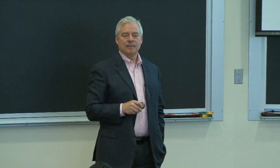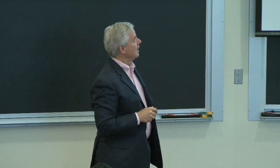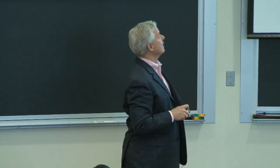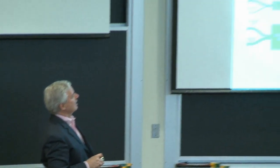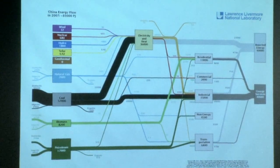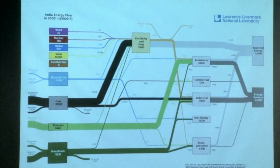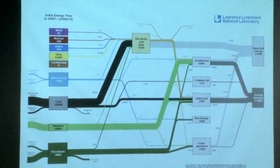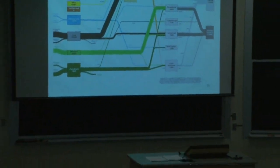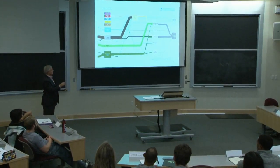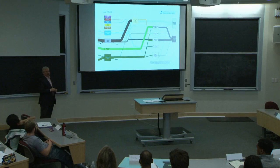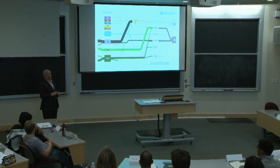Student: I noticed that almost all the electricity and heat that India generates goes to rejected energy. Is that just because they're using inefficient, outdated generators? Instructor: That would be my guess. Just by eye, the relative size of useful and wasted energy are different in China, where the plants are newer, than in India. Student: It's also the state of the grid. Instructor: The Chinese grid is much more modern. China has a lot of very high voltage lines that are quite new — their losses are less. Also, you often measure rejected energy as the difference between what's generated and what gets paid for, and in a lot of countries a lot of that's theft.